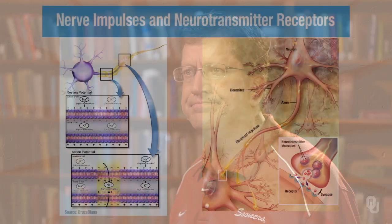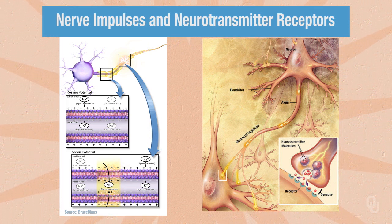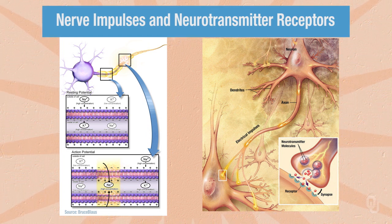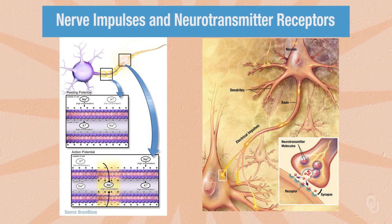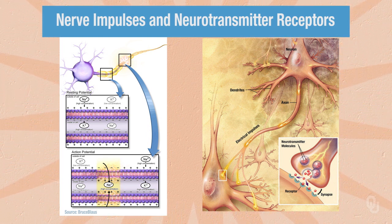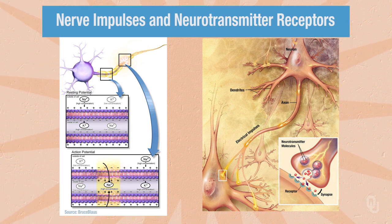To begin to answer our question, we first need to think about nerve impulses and neurotransmitters. Looking at the diagrams, the diagram on the left is a blown-up view of the axon of a neuron, illustrating the process we call an action potential, which propagates as a wave of depolarization along the length of the axon. Basically, there is a change in the electrochemical potential of the membrane that surrounds the neuron, and this wave of depolarization moves toward the end of the axon.